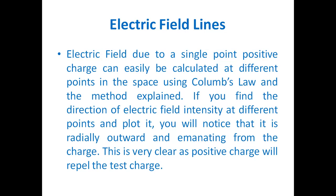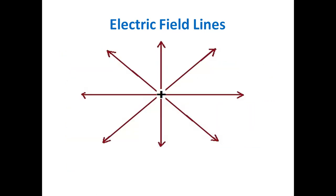Electric field lines due to a single point positive charge can easily be calculated at different points in space using Coulomb's law. If you find the direction of electric field intensity vector at different points and plot it, you will notice that it is radially outward and emanating from the charge. This is because the point positive charge will repel a unit test charge placed at any point.